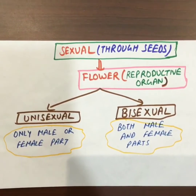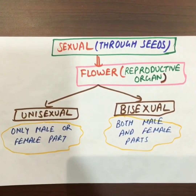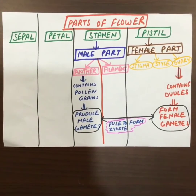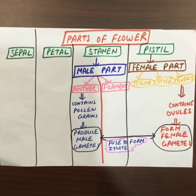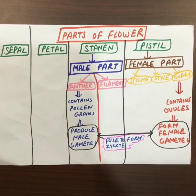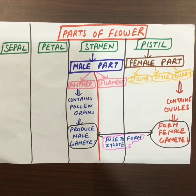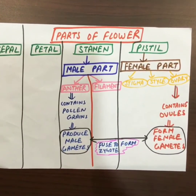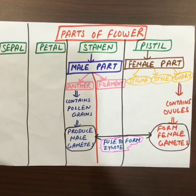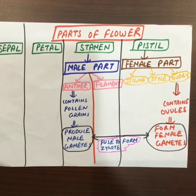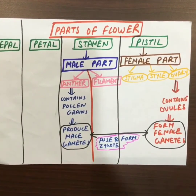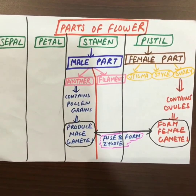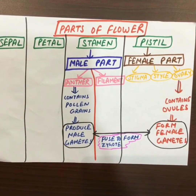Parts of a flower — there are four parts: sepal, petal, stamen, and pistil. The stamen is the male part and has two parts: anther and filament. The anther contains pollen grains which produce the male gamete. The pistil has three parts: stigma, style, and ovary. The ovary contains ovules from which the female gamete is formed. The male and female gametes fuse together to form a zygote.